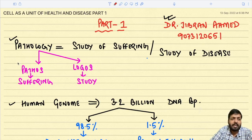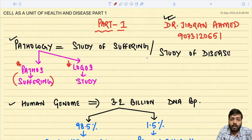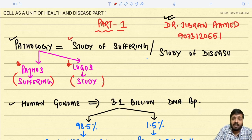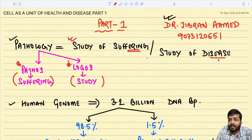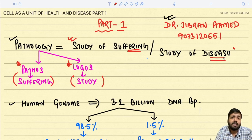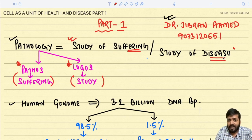First of all, what is pathology? The term pathology is derived from the words 'pathos' and 'logos.' Pathos means suffering, whereas logos means study. So ultimately, pathology means the study of suffering, or the study of disease.